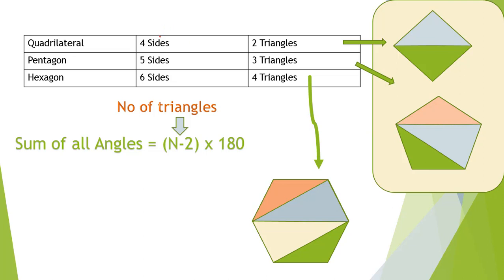There is a pattern: a relationship between the number of triangles and sides. The total number of triangles is two less than the number of sides. Four sides gives two triangles, five sides gives three triangles, six sides gives four triangles. So n minus two is the total number of triangles inside a figure, where n is the number of sides. Therefore, (n minus 2) times 180 is the formula for the sum of all interior angles.